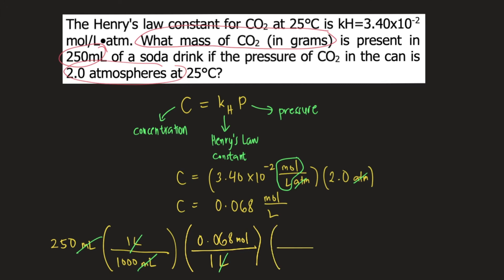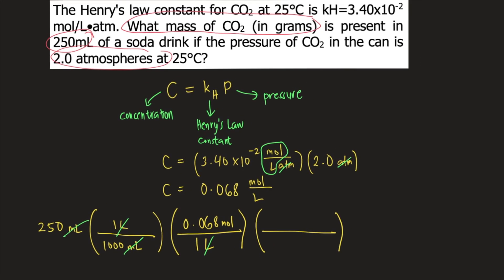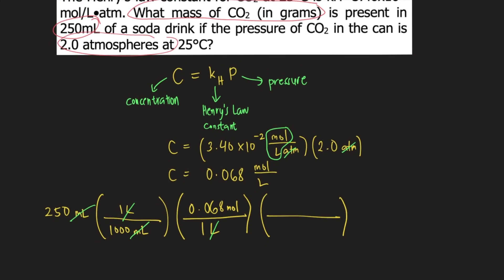Finally, to convert moles of CO2 into grams of CO2, you need the molar mass of CO2. The molar mass of carbon dioxide is 44.01 grams per mole. You put 1 mole at the denominator and 44.01 grams on top. Moles will cancel.